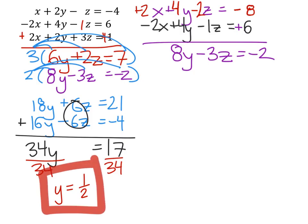Now that we have that one value, we need to look at these two equations that we started out with: 6y plus 2z equals 7, and 8y minus 3z equals negative 2. Replace one of the y values with the y value that we found, one-half. Since I have a little space with this purple one, I'm going to replace this y with one-half and then solve.